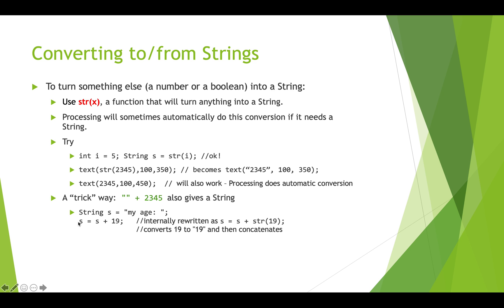So here's an example that string s equals my age and then we concatenate s with the number 19. This internally gets rewritten as s equals s plus string of 19. This is where processing is doing an automatic conversion for you. It converts 19 to 19 in quotations and creates a string that is my age 19.